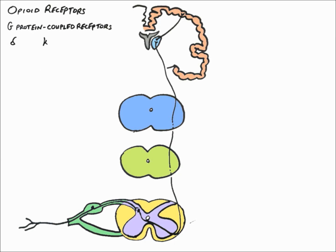These are delta, kappa, and mu. When opioids bind to mu-1 receptors, they cause analgesia and are responsible for physical dependence. Opioids binding to mu-2 receptors cause many of the side effects associated with opioid use, including respiratory depression, miosis, euphoria, and reduced gastrointestinal motility.